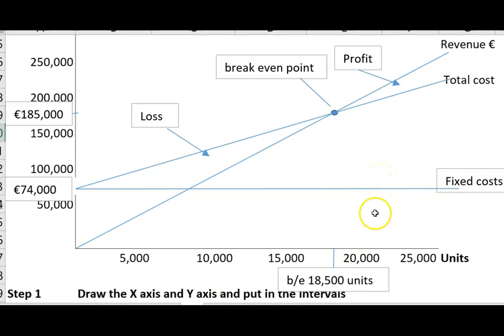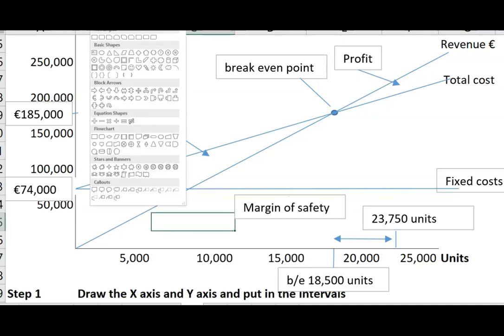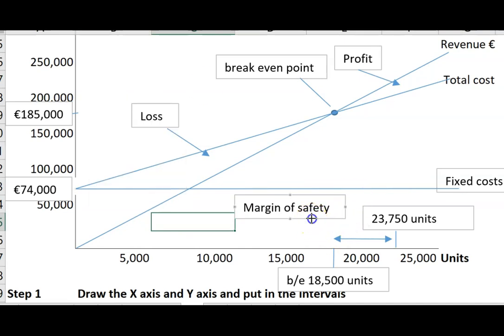The only thing left to do is show the margin of safety. Our planned production was 23,750 units for the question. So you mark in the budget level activity, 23,750 units. I'm just short of space here, so I'll mark it there. The difference between the breakeven point of 18,500 and 23,700 is the margin of safety, which is how much your production can drop before you incur a loss.